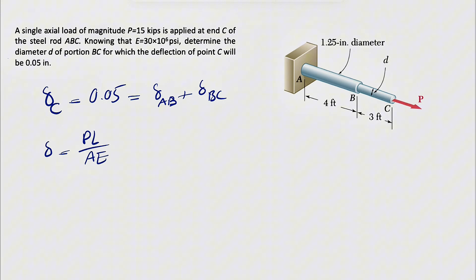We just have to do this for each of them, and we should be able to find the area for BC, and after that it's easy enough to find the diameter D for the BC. So let's start.